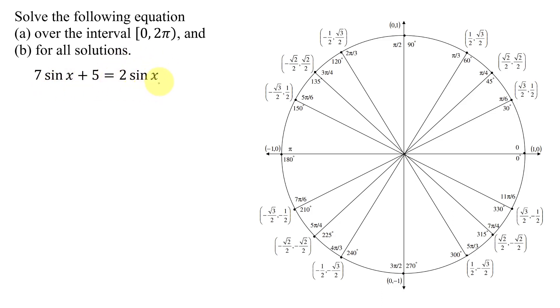I'm going to collect my sine x's on the right-hand side. So I'm going to subtract 7 sine x from both sides of this equation. These add up to 0, so I get 5 equals 2 sine x minus 7 sine x is negative 5 sine x.